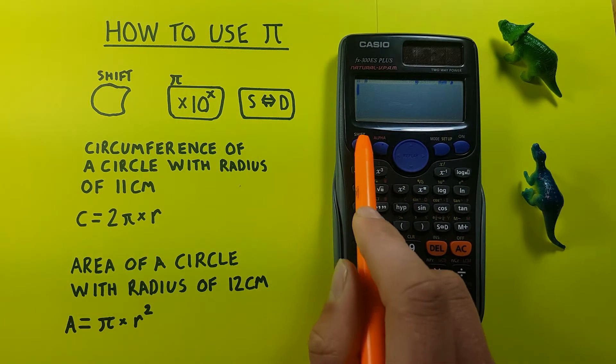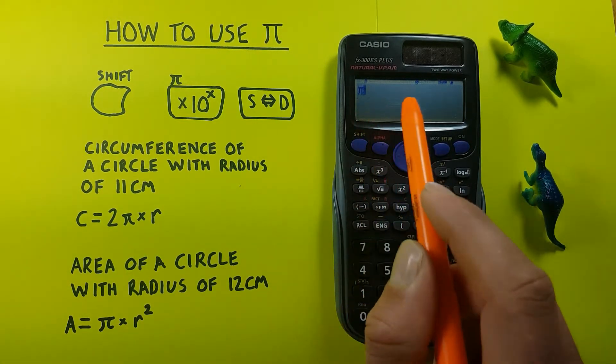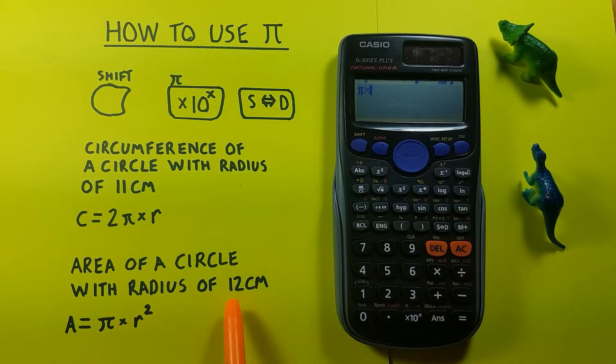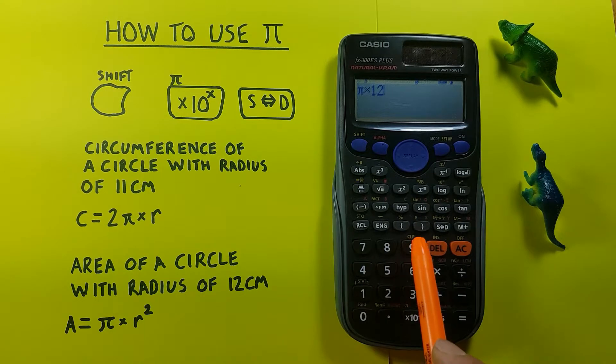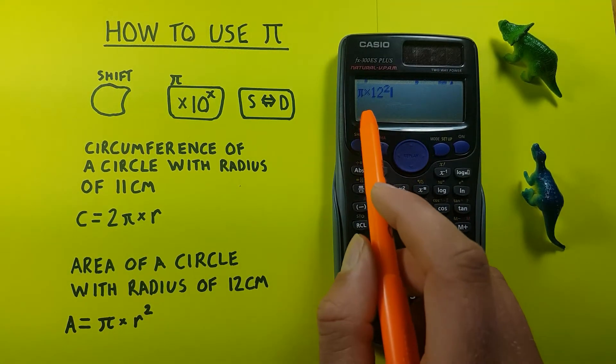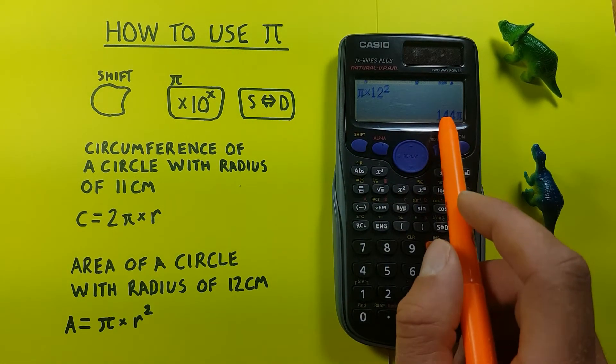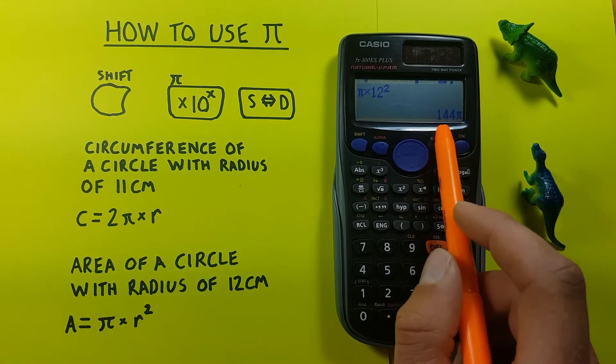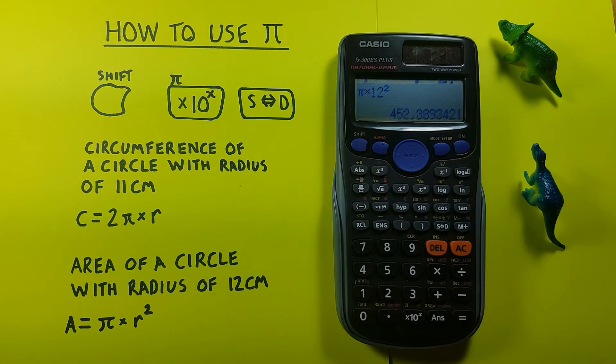So we can place the Pi on the screen, shift times 10 to the x power key, there's our Pi times our radius which was 12 centimeters. We'll put 12 in there and then squared using our square key. Press equals and we get an area of 144 Pi, which converts to 452.389 and can convert back as well.